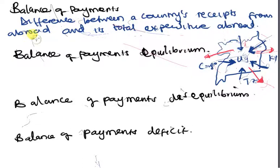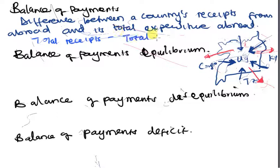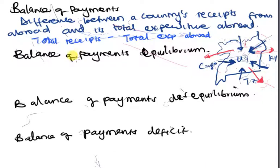We sum all of this up in one given year to get what we call balance of payment. It is the total earnings from abroad — total receipts — minus the total expenditure abroad. We are simply comparing how much money enters Uganda from outside and how much money flows out to other countries in a given period of time.